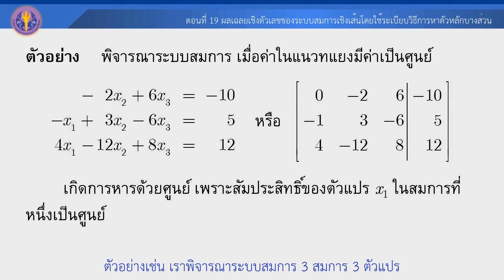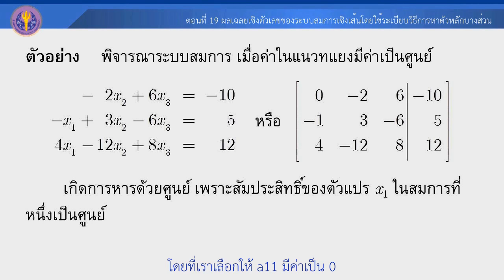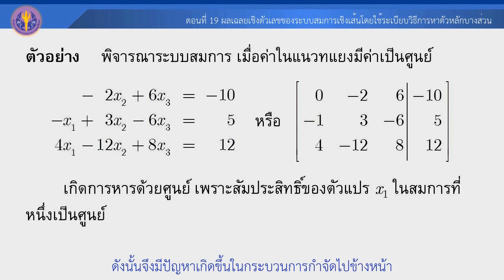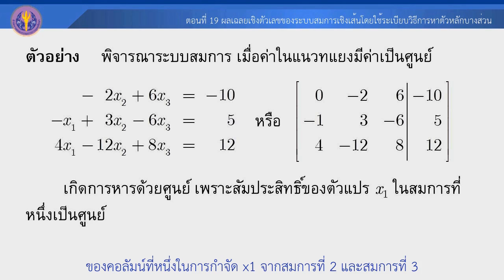For example, we have a 3x3 system. We have a problem with element a31. We consider column 1, which is the pivot column, and examine the second element.